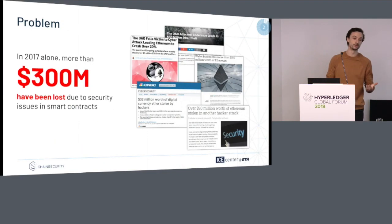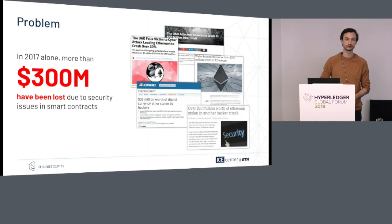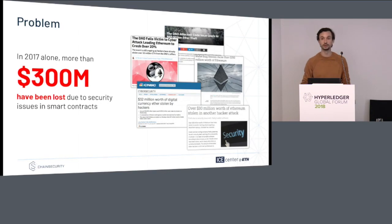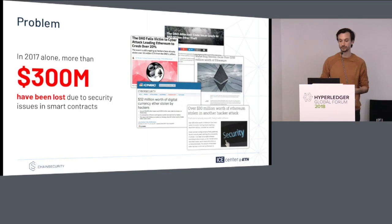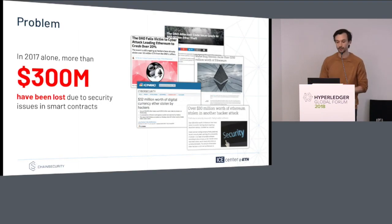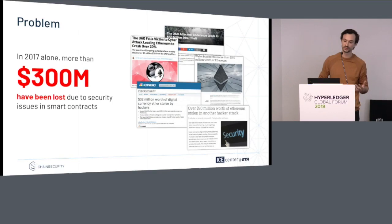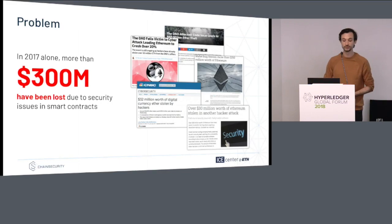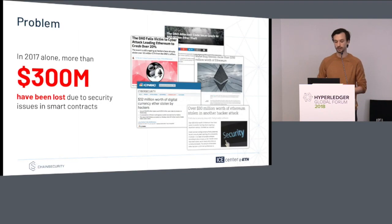What is the problem? In the Ethereum world it's quite common that people look for vulnerabilities and try to exploit them. Alone in 2017, already 300 million dollars have been siphoned out of smart contracts. While it is not so prevalent in Hyperledger Fabric — maybe because it's not emphasizing tokens or digital assets in general — it is still very desirable that a smart contract or the chain code actually implements the functionality that is intended.